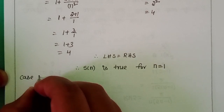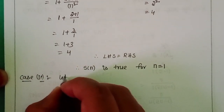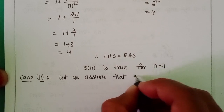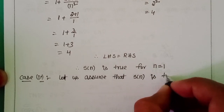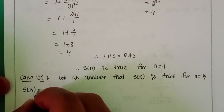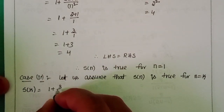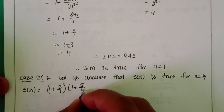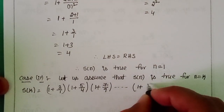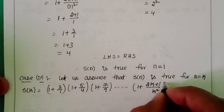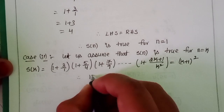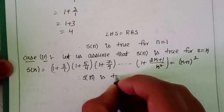Case 2: Assume S(n) is true for n = k. Substituting k in place of n: (1 + 3/1)(1 + 5/4)(1 + 7/9)··· (1 + (2k+1)/k²) = (k+1)². Therefore S(n) is assumed true for n = k.